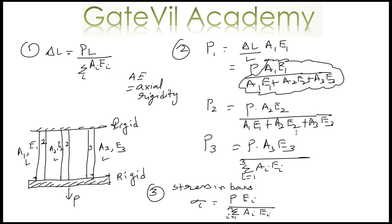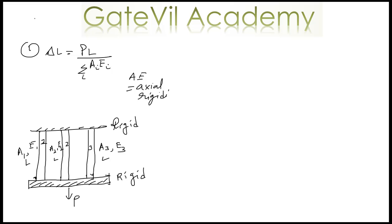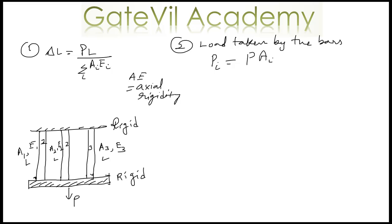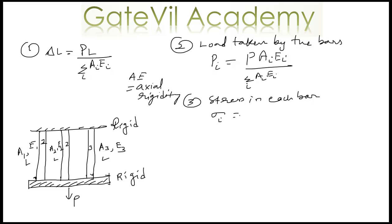Let me summarize the three expressions. First, the load taken by the ith bar: Pi equals P times Ai Ei divided by summation of Ai Ei for all i. Second, the stress in the ith bar equals P times Ei divided by summation of Ai Ei for all i.